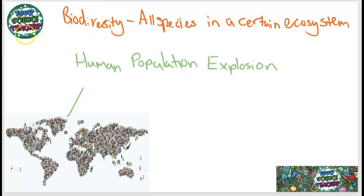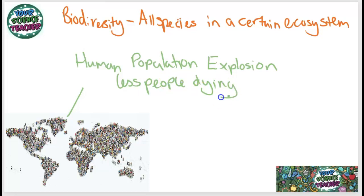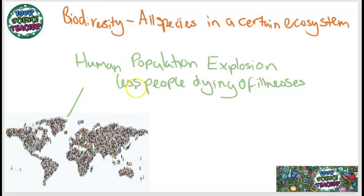If we look at some causes for why the human population has increased rapidly over the past thousand, two thousand years — it's because less people are dying of illnesses. This is due to the fact that we have better healthcare nowadays. If there is a pandemic, for example coronavirus, the whole world will have the information and hopefully access to a vaccine in order to tackle this.